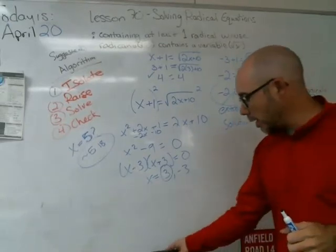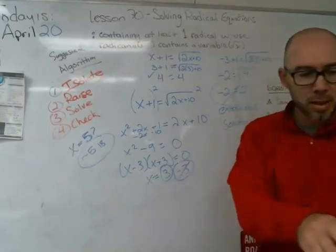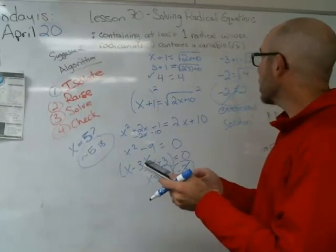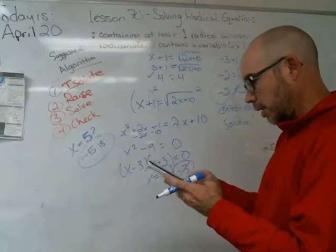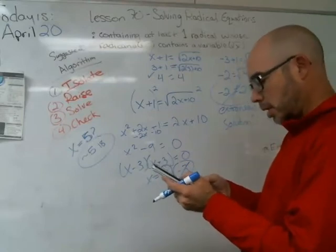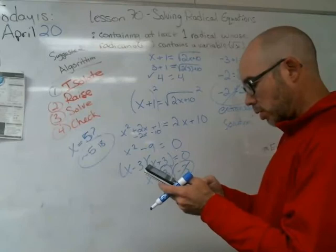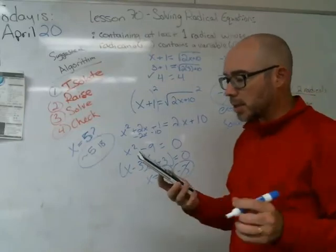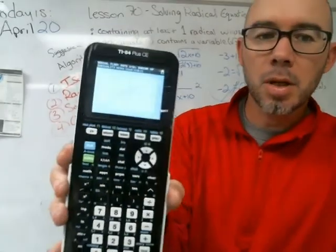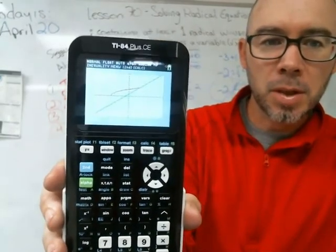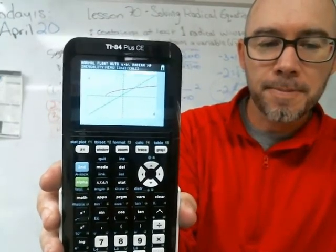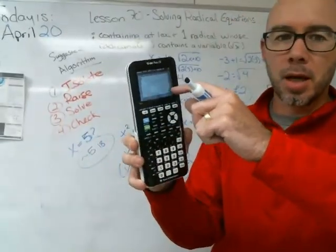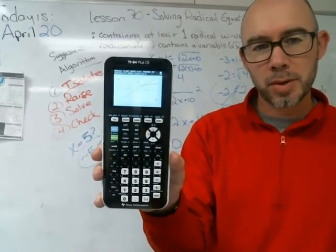Extraneous solution — it's a solution from the algebra but not a valid solution in the real world. To double-check: set Y1 equal to x plus 1 and Y2 equal to square root of 2x plus 10, then graph them. There is only one place where those two lines intersect — confirming only one valid solution. Negative 3 would require the lower branch of the curve, which doesn't exist for square roots. Can't emphasize enough: they will put questions where you have to check whether solutions actually work.